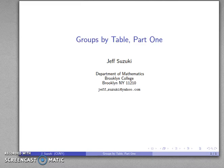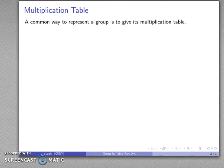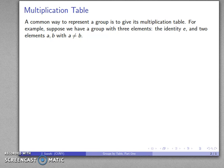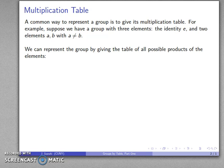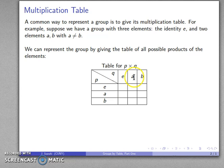One of the more challenging aspects of mathematics is trying to figure out a way of representing something. With groups, one of the ways we do that is to represent them using a multiplication table. This is a fairly common way of representing small groups, though it's not quite as useful once groups have thousands of elements. For example, let's say I have a group with three elements, and I'll set up this multiplication table with elements E, A, and B.